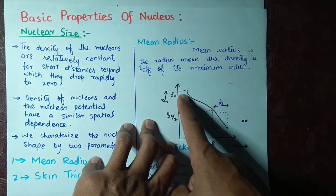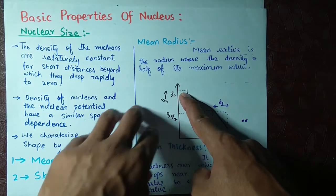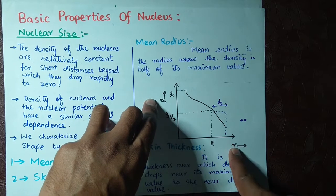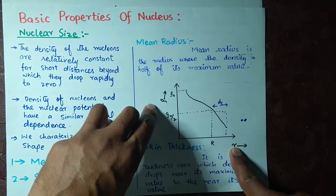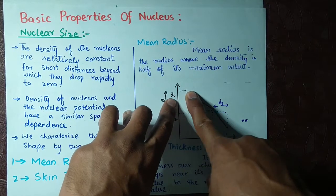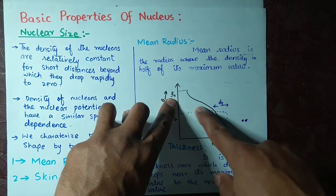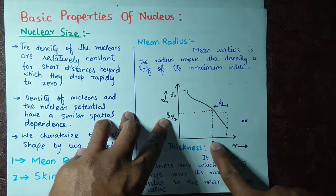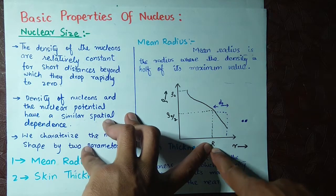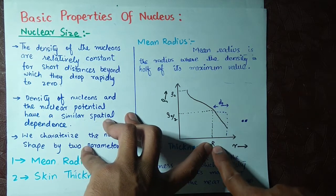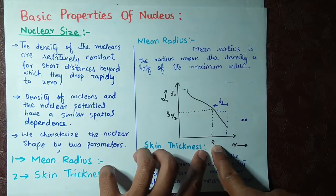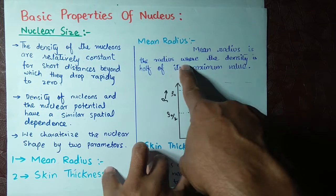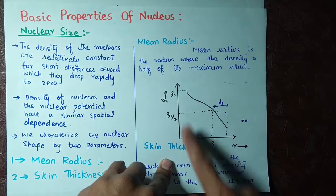Looking at a graph of density ρ versus radius r: here the density is at its maximum value, and half of this maximum value corresponds to a specific point. From that point we read across to the radius r on the horizontal axis, and that radius r is known as the mean radius.